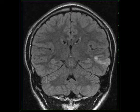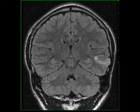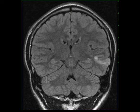Imaging findings consist of focal cortical thickening and abnormal gyration. T2 FLAIR hyper-intense signal is usually seen. There is blurring of the cortical and subcortical white matter interface.